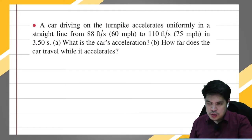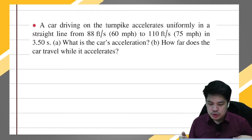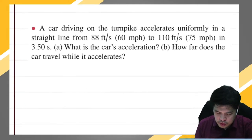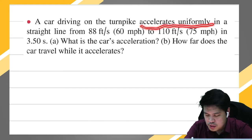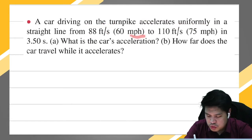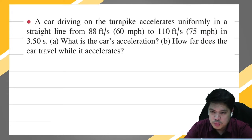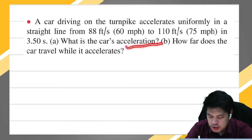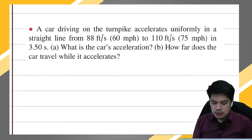Let's try to solve this problem. This is under motion with constant acceleration. A car is driving on the turnpike and accelerates uniformly — that means uniform or constant acceleration — in a straight line from 88 feet per second to 110 feet per second in 3.50 seconds. The first question is what is the car's acceleration, and the second question is how far does the car travel while it accelerates.